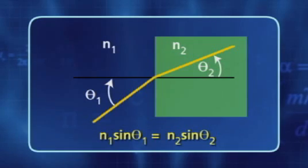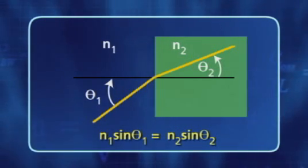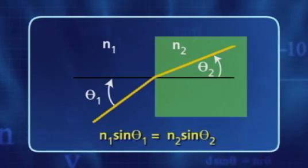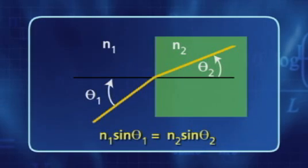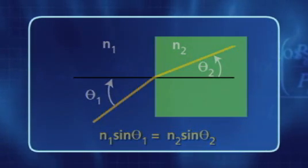The results for light traveling from a more dense into a less dense material, N1 greater than N2, are significantly different than the opposite case, N2 greater than N1. Let us determine what happens at the interface for the two possible conditions according to Snell's law.